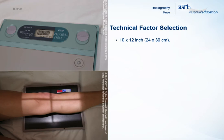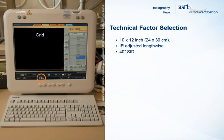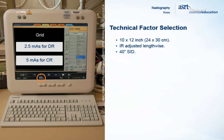A 10 by 12 inch or 24 by 30 cm image receptor is used for an AP oblique projection of the knee and is adjusted lengthwise. The SID is set at a minimum of 40 inches, although some departments may require a longer SID. Collimation is adjusted to 10 inches by 12 inches. 85 kVp is a common setting for an oblique projection performed with a grid. Automatic exposure control may be used to achieve proper mAs setting; however, common mAs settings are 2.5 mAs when using digital radiography and 5 mAs when using computed radiography. When a grid is not used, kVp is commonly set to 70 and the mAs settings remain the same. A small focal spot is selected with all settings.